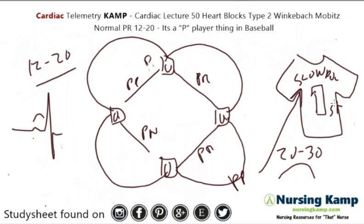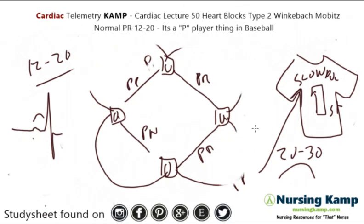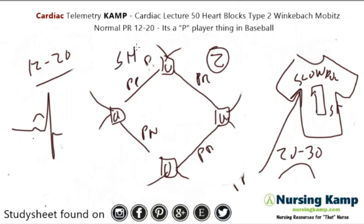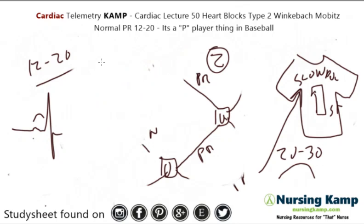Now we're going to talk about two more players — this is called second degree heart block. In second base, there is a second baseman and a shortstop. So on second degree there are two players: the second baseman and the shortstop.